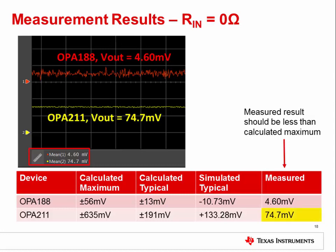The expected output voltage results from the measurement are shown here. The OPA211 has a measured output voltage of 74.7 millivolts and the OPA188 has a measured output voltage of 4.6 millivolts. You may have different results in your experiment. How did the measured and simulated results compare to the typical hand-calculated results? Take a moment to look over the previous results and draw your own conclusions.